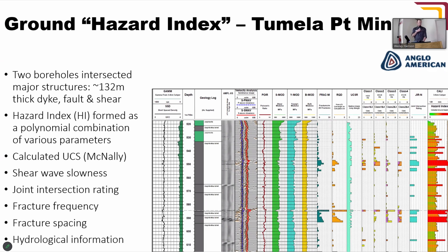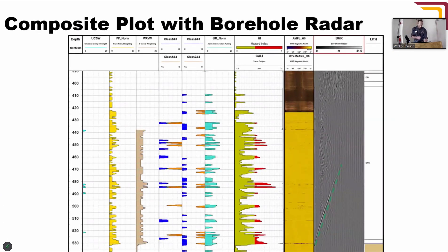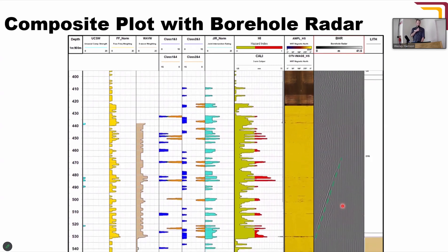In this particular instance we've got a thick dike, a fault, and a shear. On the right-hand side we've integrated the radargram into this — this is a cover hole drilled from surface, quite a few hundred meters. We've got the integrated hazard index attribute showing areas of higher hazard, the combined optical and acoustic televiewer tool, and the radar on the right-hand side. I've annotated that plot showing the dike contact.